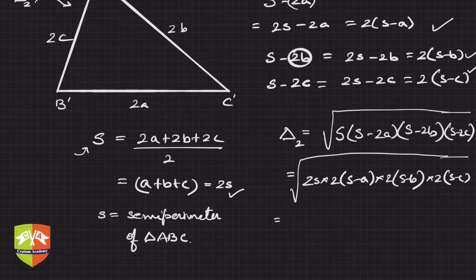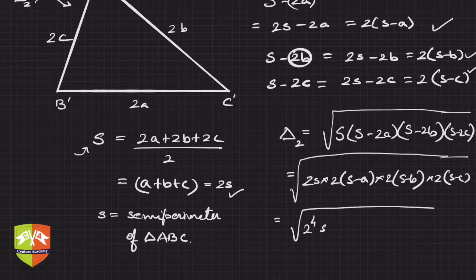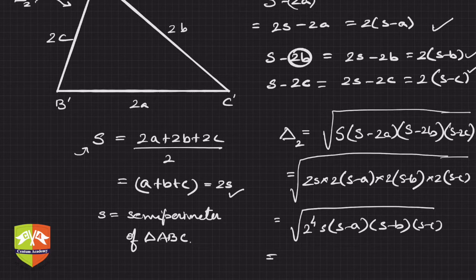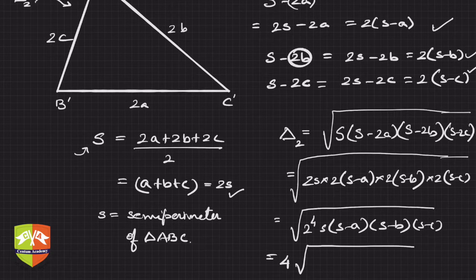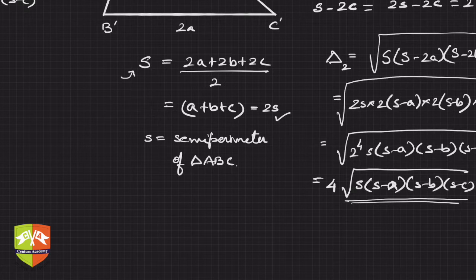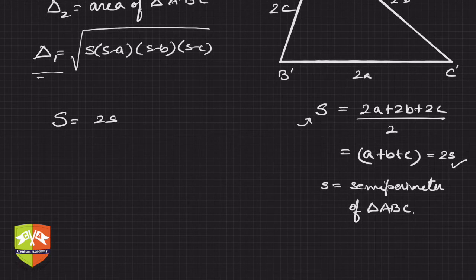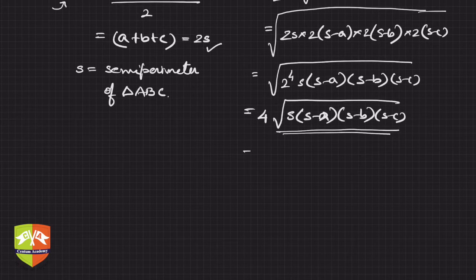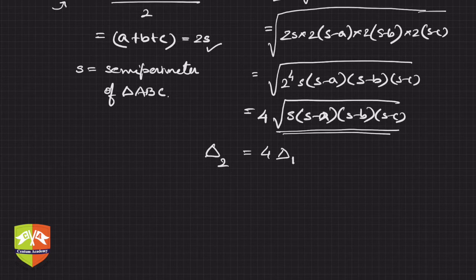So Delta 2 equals the square root of S(S−2a)(S−2b)(S−2c), which becomes the square root of 2s · 2(s−a) · 2(s−b) · 2(s−c). There are four 2s inside, giving 2 to the power 4. Taking the square root gives 4. So Delta 2 equals 4 times the square root of s(s−a)(s−b)(s−c), which is 4 times Delta 1.